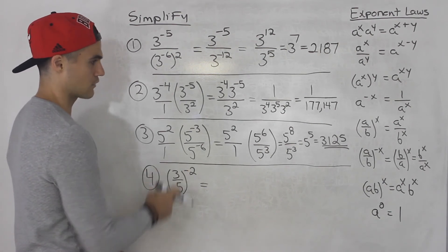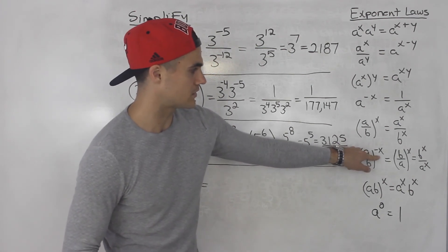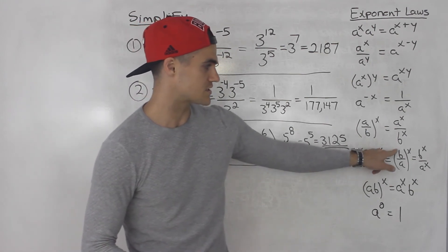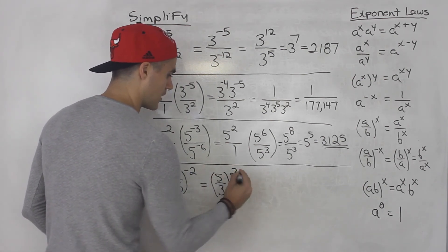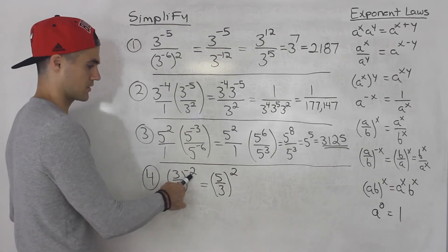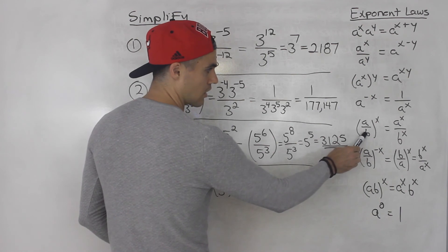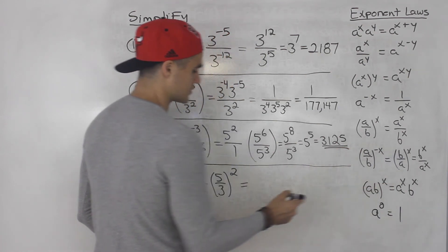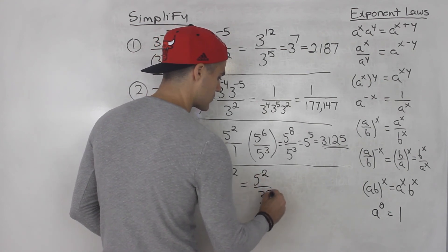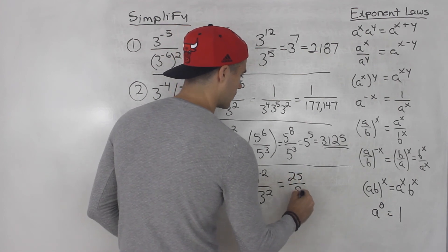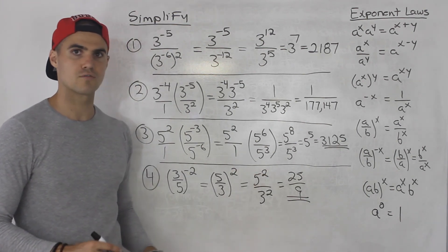Here we have 3 over 5 to the power of negative 2. Using our exponent laws for a fraction with a negative exponent, first flip the fraction — a over b becomes b over a — and change the exponent to positive. So this becomes 5 over 3 to the power of positive 2. Then distribute the exponent to the numerator and denominator: 5 squared over 3 squared gives us 25 over 9, which can't simplify further.